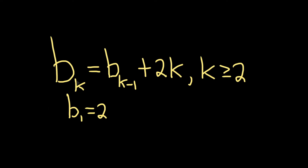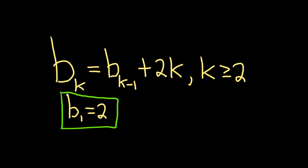In this problem, we're going to find the first four terms of this recursively defined sequence. The first term is already given — it's b sub 1, and b sub 1 is equal to 2.